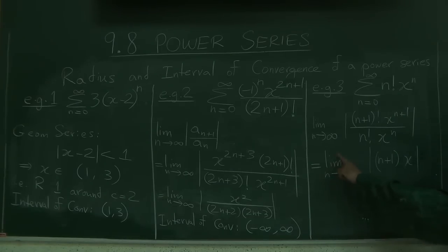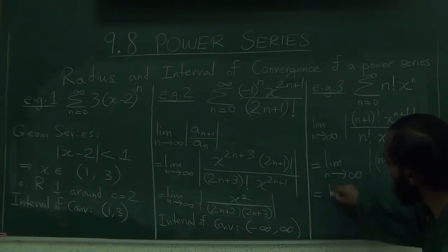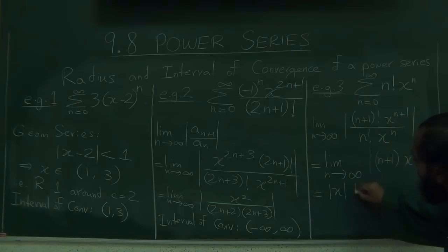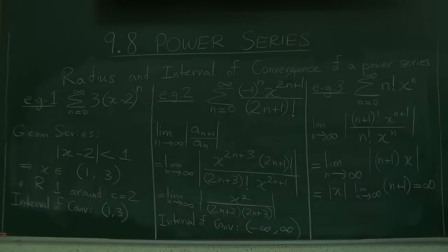We're going to limit to infinity, the variable under the limit is n, it's the n that is increasing, for any given one value of x, x is a constant, it can be pulled out. So this will be absolute of x times the limit where n goes to infinity of n plus 1, and this limit is infinity. It doesn't matter how tiny or bigger x you have, this is going to be infinity, except when x is 0.